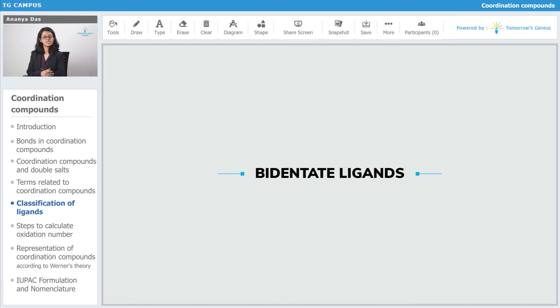The next topic is bidentate ligands. Bidentate ligands are those which have two donor atoms which can donate to the metal atom at the same time.